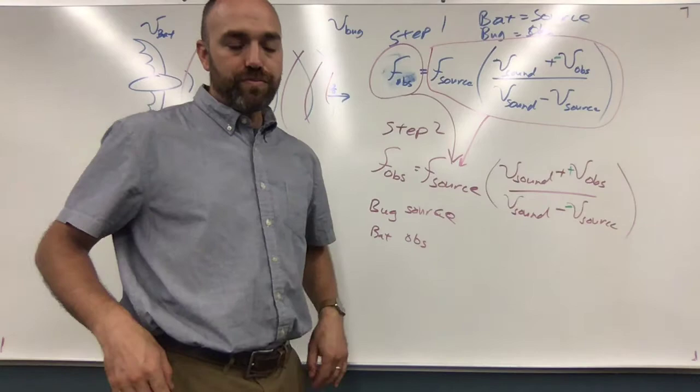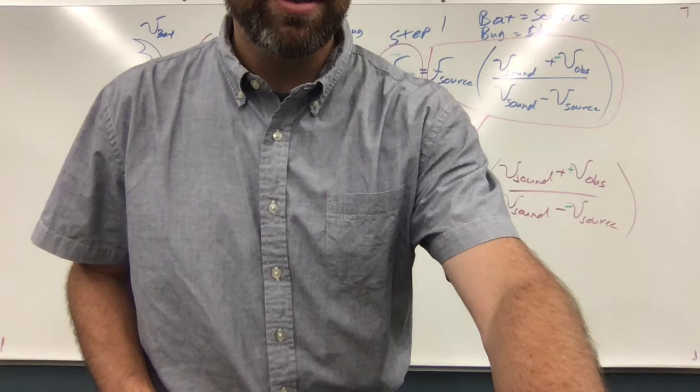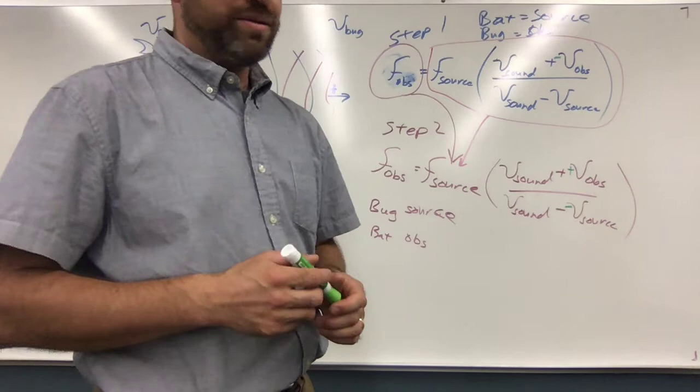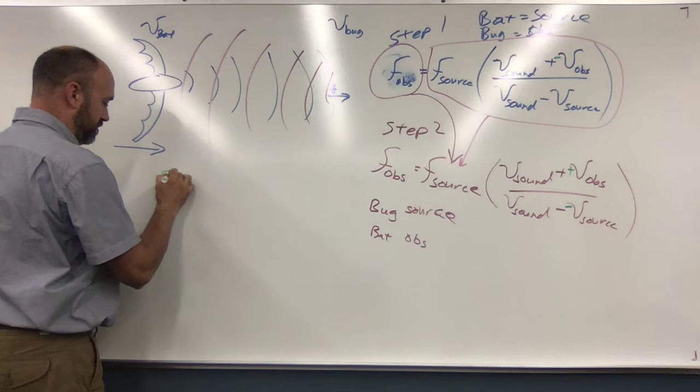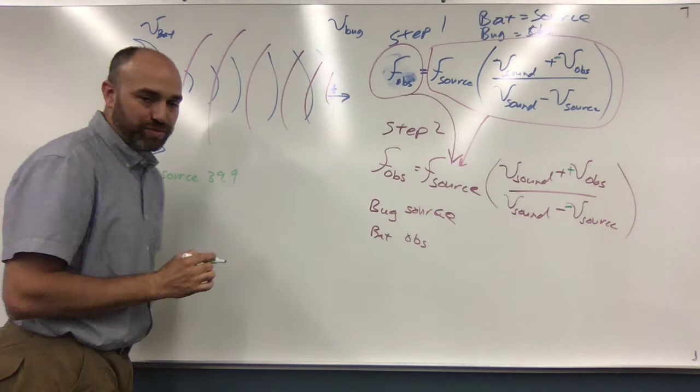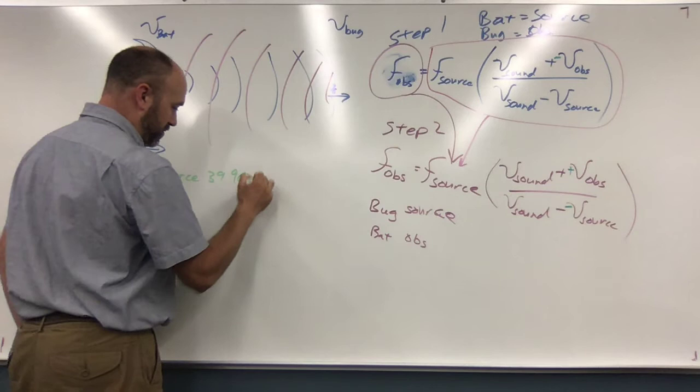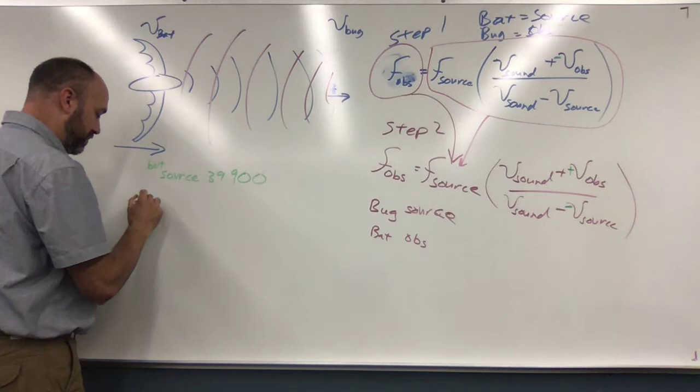Which should be used for the frequency of the observer and the frequency of the source again? Well, I didn't put any numbers in here. Let me read the question. Like say the bat emits a 39.9 chirp and it receives back an echo at 40.3. Would the echo be the source or would the echo be the observer? Okay, say your numbers again. The bat emits a 39.9 chirp. 39.9 kilohertz. So that's 39.9 with the decimal moved over three places, so that's going to be 39,900.